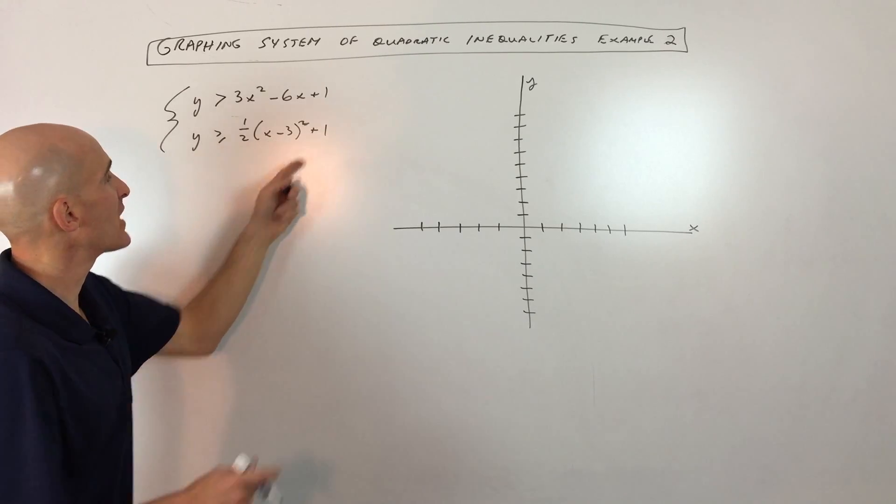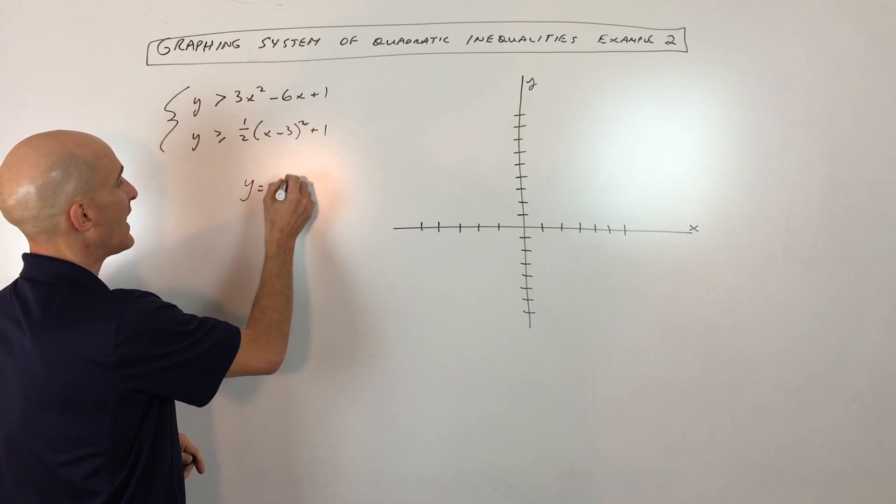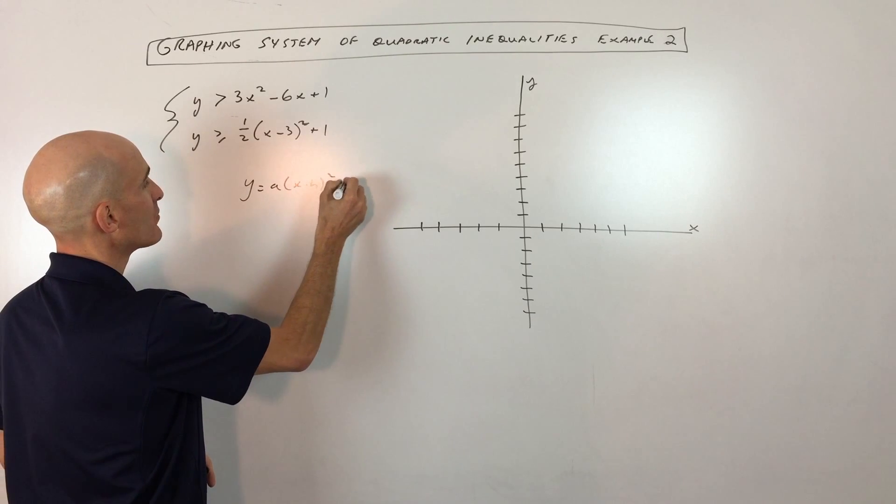Let's go ahead and tackle the second one first. This one's in the vertex form, and you can see that's the a times x minus h squared plus k form.